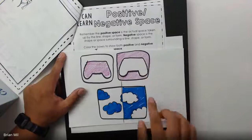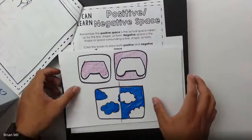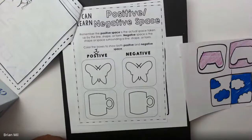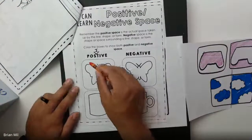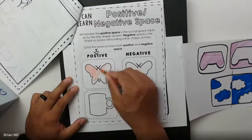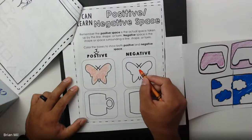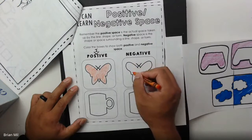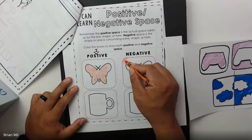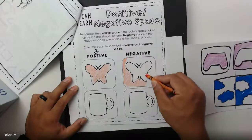So you can use a pencil, marker, colored marker, or crayon. Using the drawn objects in the workbook, you're going to make the butterfly show positive space — color it in. Then on the other side, color in the negative space, so you're subtracting the shape; all that's left is the background. I'm coloring on the outside, just like how the game controller example was done.